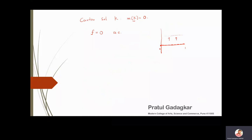Looking at this function carefully: the closed interval [0,1] is divided into two disjoint sets, K and K complement. On K, the function is defined to be 1; on K complement, the function is defined to be 0. This means f is actually nothing but the characteristic function of the Cantor set, χ_K.